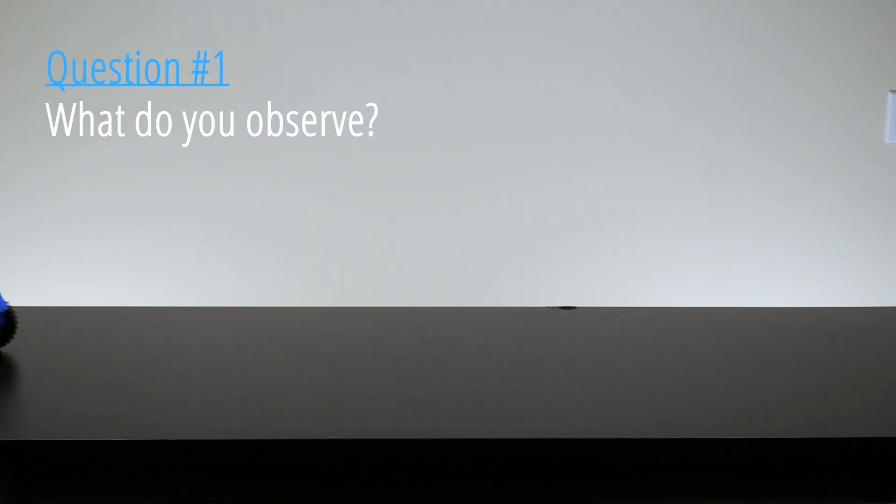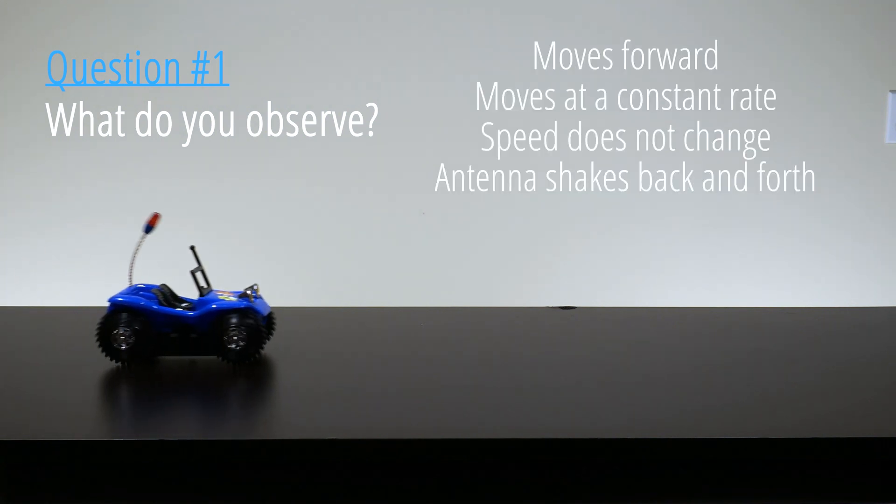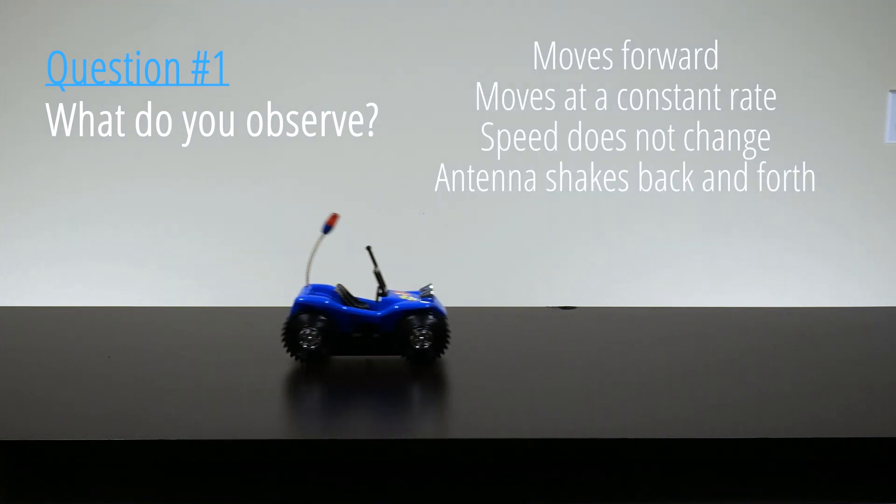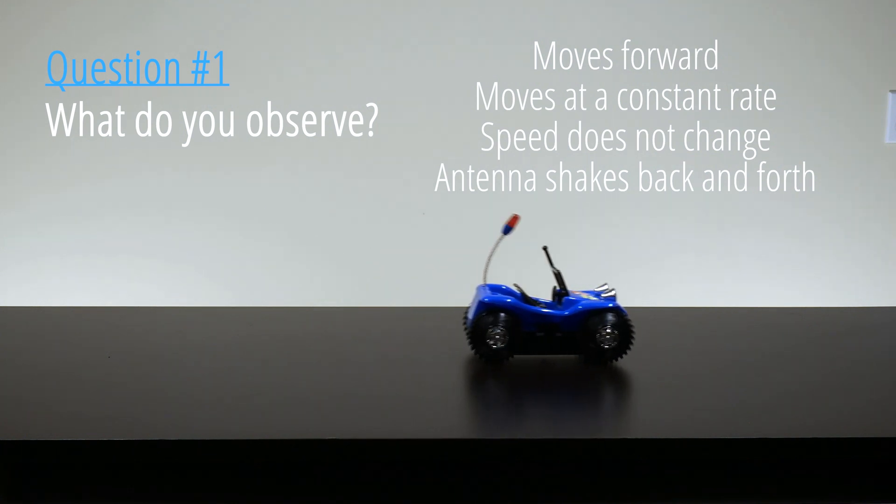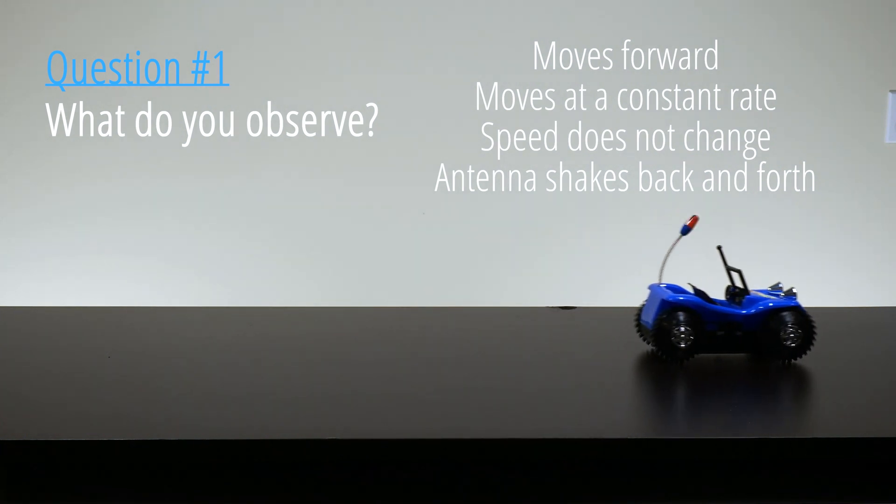To begin this lab, start by demonstrating the motion of the toy car and ask students what they observe. Record students' observations on the board. You want the class to recognize the car is moving at a constant speed in a straight line.